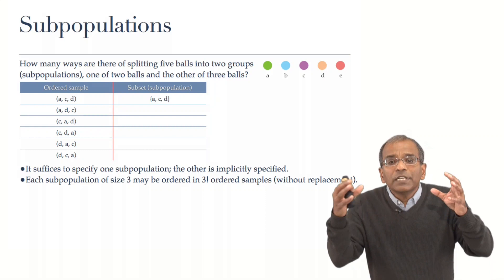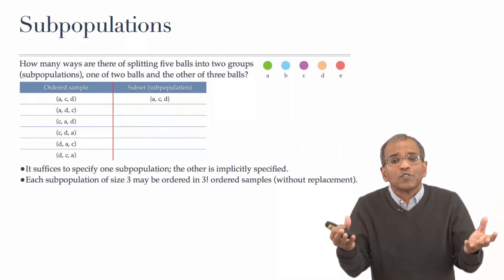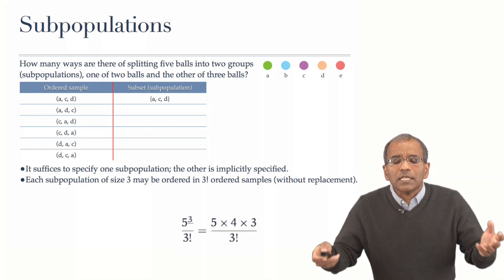Therefore, the number of different ways in which you could engender a population, a subpopulation of size three, if you multiply that number by six, you must get all possible ways of specifying three distinct elements without repetition.